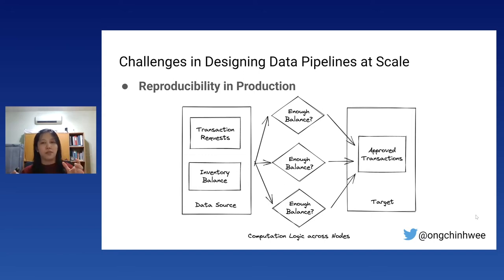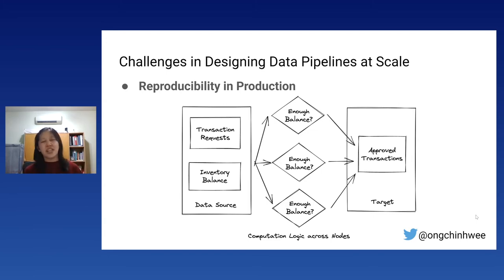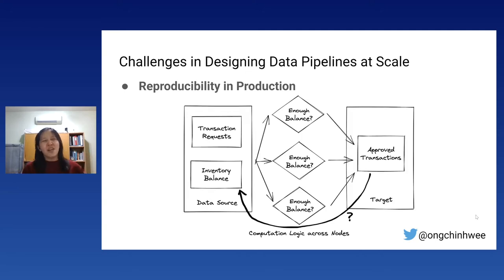For example, consider checking whether there's enough balance for a transaction. At time t, I have a transaction requiring a certain amount, and I check inventory balance. Another transaction — smaller or larger — depends on when it's made. Whether we have enough balance depends on the point in time the transaction is made, since stopping an order changes the inventory balance over time.